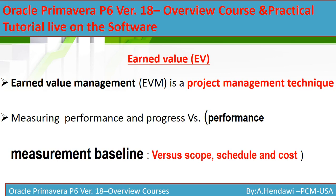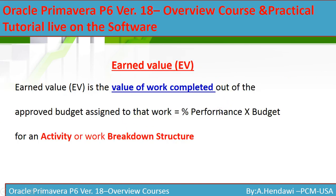Earned Value Management is a management technique that measures performance and progress versus the performance measurement baseline, which covers scope, schedule, and cost. Earned Value is the value of work completed — it is the approved budget assigned to the work completed. If you do this in Primavera or anywhere, you multiply the performance by the budget for an activity or work breakdown structure.